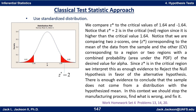We compare z-star = 2 to the critical values of ±1.64. Since z-star is in the critical region — above the upper critical value of 1.64 — we interpret this as enough evidence to reject the null hypothesis in favor of the alternative. There is enough evidence to conclude the sample does not come from a distribution with the hypothesized mean. In this context, we should stop the manufacturing process, find out why we're making bigger pistons, and get the problem fixed.